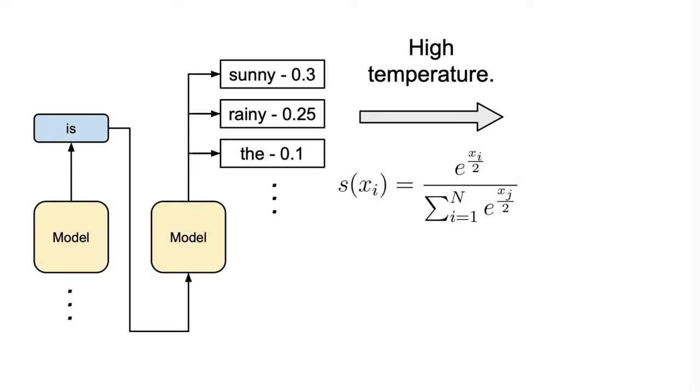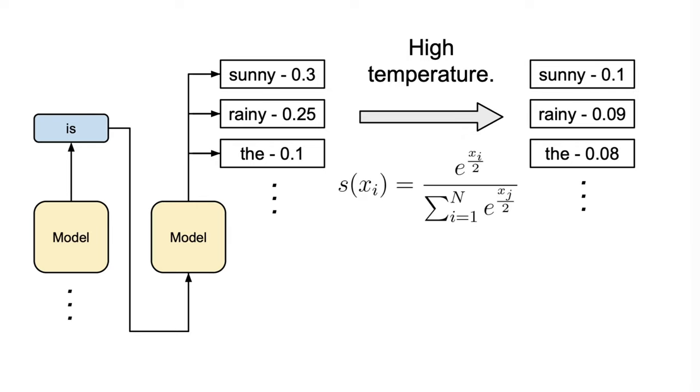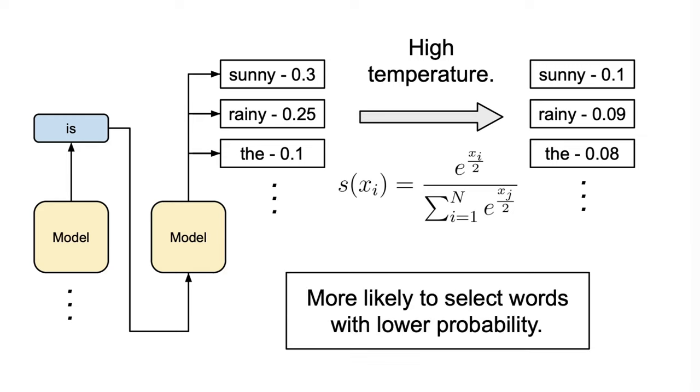On the other hand, if we increase the temperature by setting theta equal to 2, we would decrease each probability in the distribution, because the exponential function takes less extreme values if the input has a lower value, making it more likely to select words with a lower probability, like 'rainy' or 'the.'